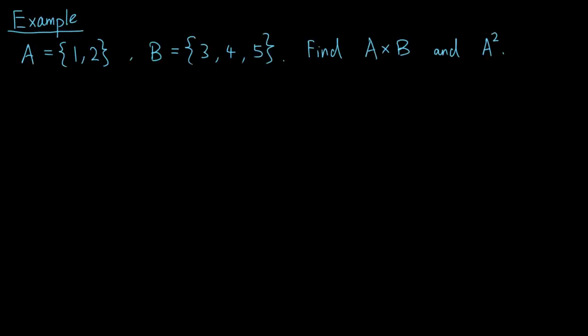Let's look at an example. Suppose A is the set containing 1 and 2, and B is the set containing 3, 4, and 5. We want to find the Cartesian product A cross B and A squared. By definition, A cross B is the set of ordered pairs (a, b), where a is an element of the set A, and b is an element of the set B.